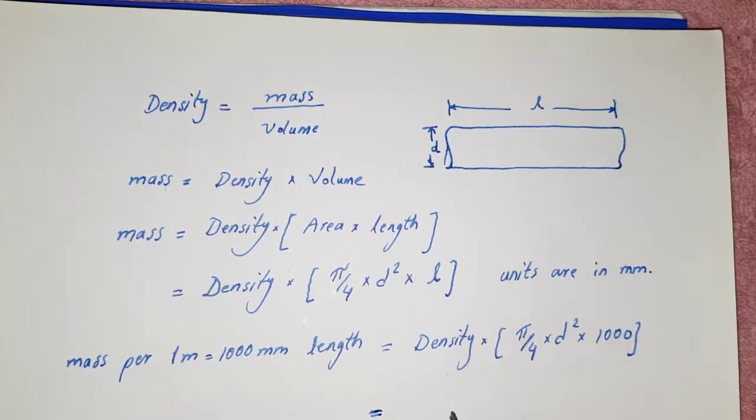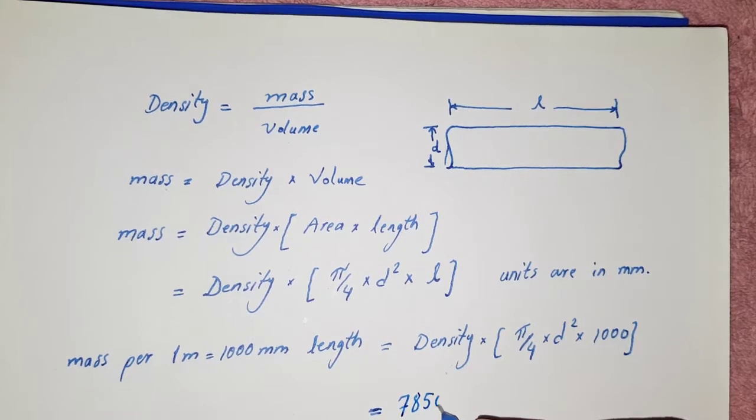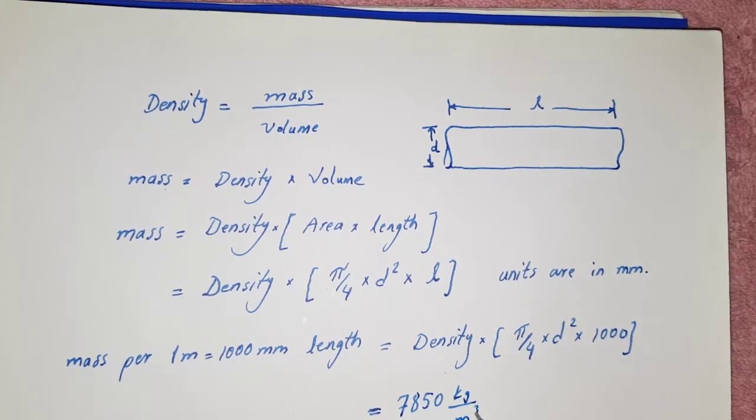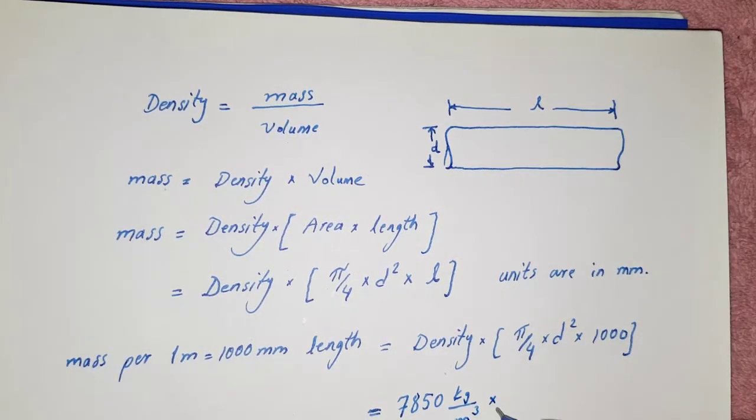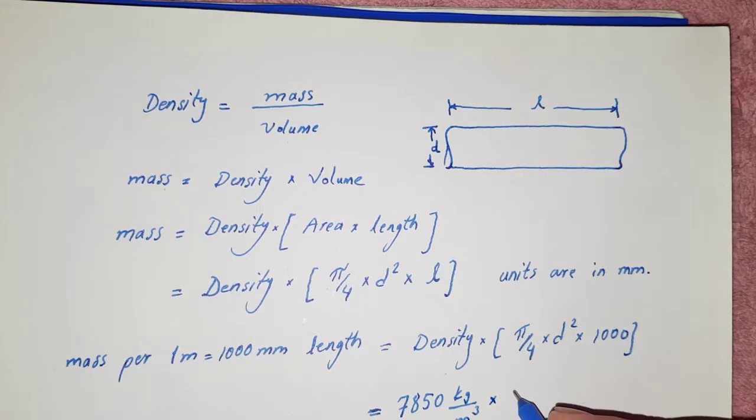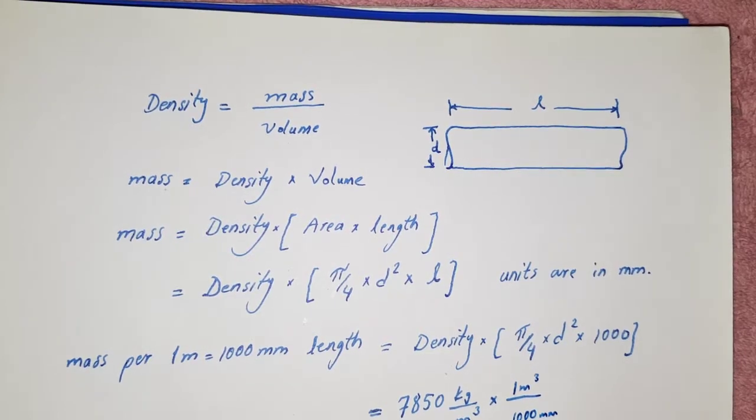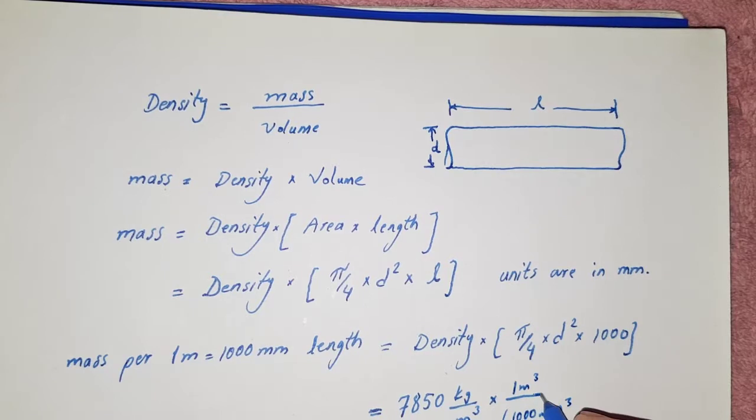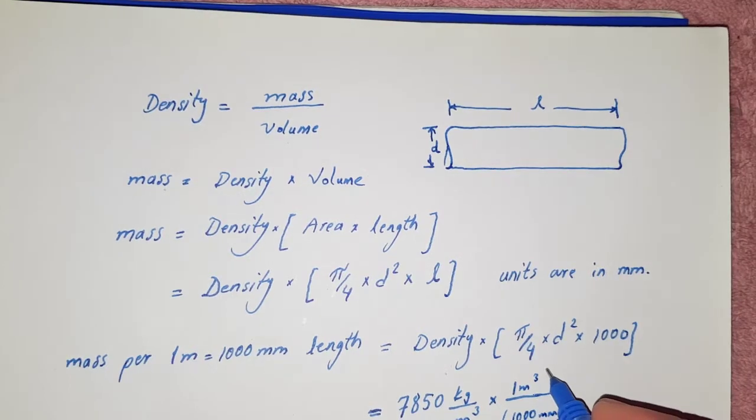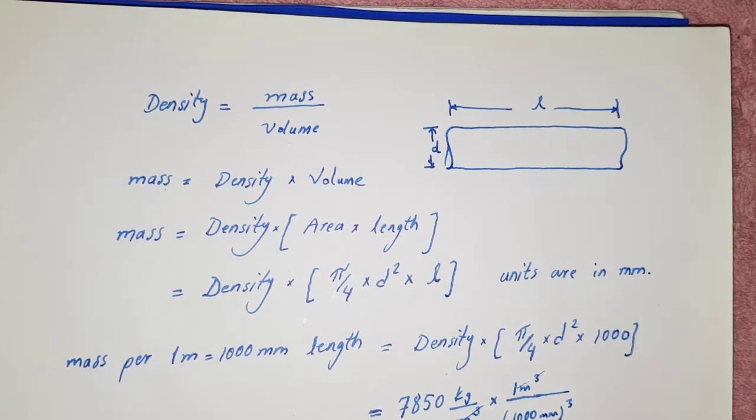We all know that the density of reinforcement bar is equal to 7850 kg per meter cube. Since we said the units are in millimeters, we have to convert this. One meter cube is equal to thousand millimeter whole cube. This will be converted because this meter cube will be cancelled with this meter cube, and in the denominator we will have millimeter cube.